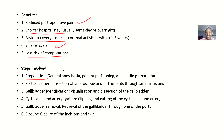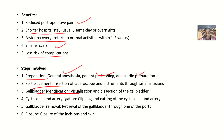The steps involved: first, prepare the patient — administer general anesthesia, position them well, and ensure the area is sterile to prevent transmission of bacteria. Next is port placement — insertion of the laparoscope and instruments through the small incisions. Then gallbladder identification — visualize and dissect the gallbladder. Next, cystic duct and artery ligation — clip and cut the cystic duct and arteries to prevent bile or blood from leaking into the abdominal cavity. Finally, gallbladder removal — retrieve the gallbladder through one of the ports.